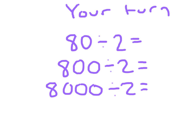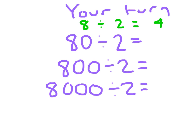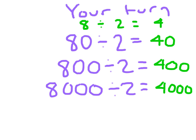All right, it's your turn. Please write down these problems and carefully solve them. Think of the basic fact you're going to start with, and you might even want to write that down. Hit pause, solve them, and then we'll come back and check your answers. Did you start with the basic fact 8 divided by 2 equaling 4? 80 divided by 2 is 40, 800 divided by 2 is 400, and 8,000 divided by 2 is 4,000. Be careful — they won't always set it up with a neat sequence of one, two, or three zeros. They might write 800 divided by 2 and then jump to 80,000 divided by 2, so you have to be really careful and follow those steps.